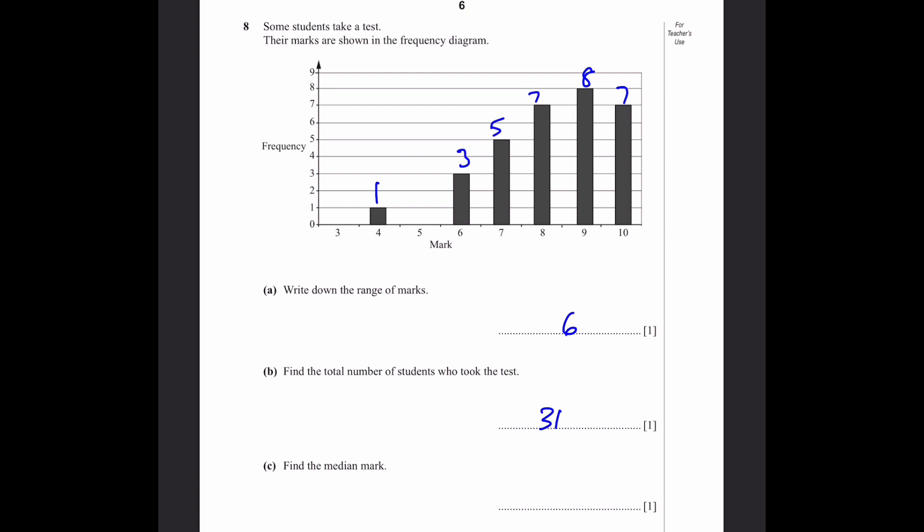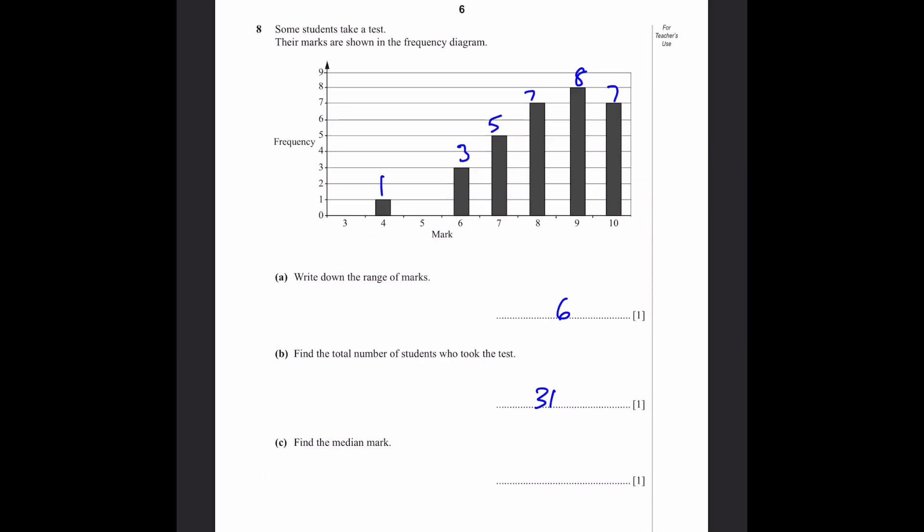Part C: Find the median mark. We have 31 students who took the test. We need to find the median mark, which is the middle student. The middle student is the 16th student, since 1 plus 31 divided by 2 becomes 16. We have 1 student at 4 marks, then 4 students total, 9 students total, and 16 students total. Once we get to 8 marks, there are 16 students in total, and the 16th student is included in that. That's why the answer is 8 marks.